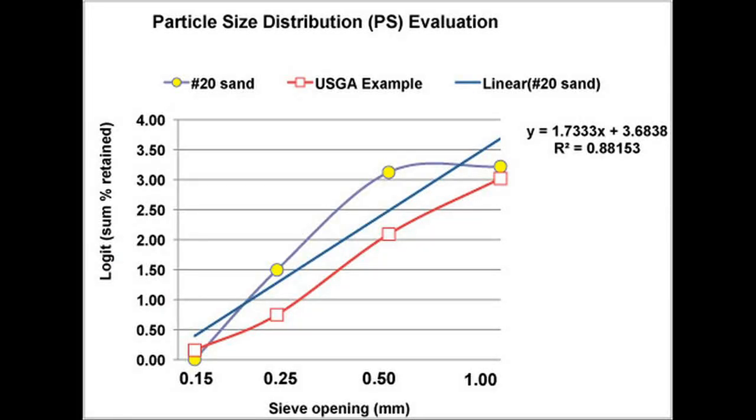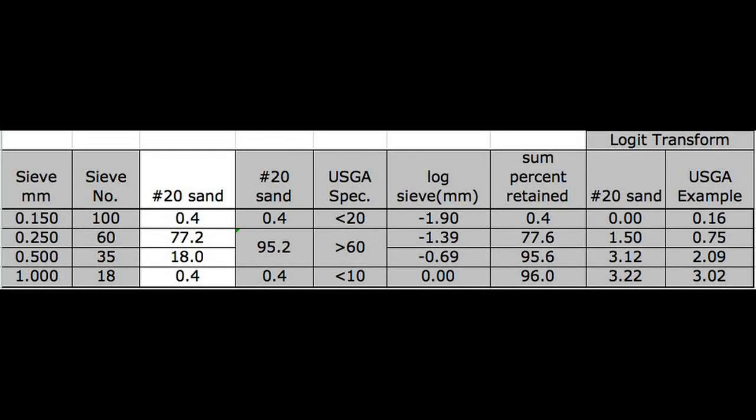This other sand, the number 20 sand, is another product that is common out in our area, out in the west. And it has more particles in the 0.25 millimeter range. So it sort of flattens out the curve a little bit more. You can see that the R-square is a little bit better at 0.88 and the slope is high enough at 1.73. Now let's take a look at the comparison to USGA specs on this one. In this case, we see that we're well below the 20% maximum for the 0.15 millimeter range particles. We're still in the 95 up in the high range for the 0.25 and 0.5 millimeter range. There's a little bit of a shift. In this case, we see that the bulk of the particles are in the 0.25 millimeter range instead of the 0.5 millimeter range that we saw in the number 30 sand. And we see that we're well in range for the one millimeter particles also at 0.4%. So all the particles still in that 0.25, 0.5 millimeter range. This time, the bulk of the particles in the 0.25 instead of the 0.5.